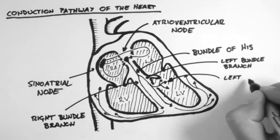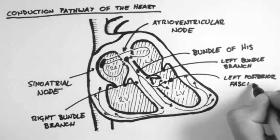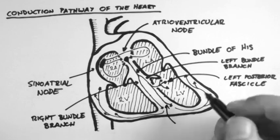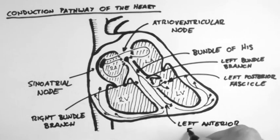The left bundle branch then splits into the anterior and posterior fascicles. A fascicle is Latin for a little bundle.